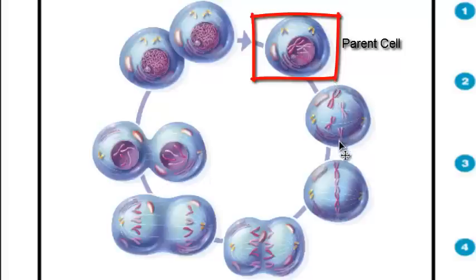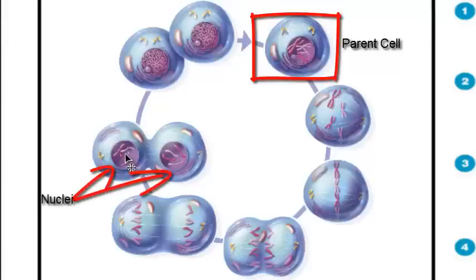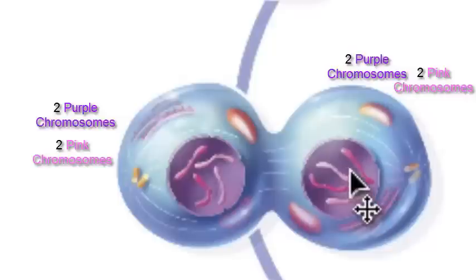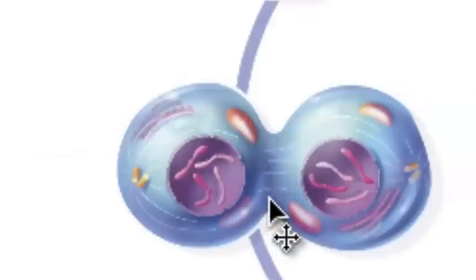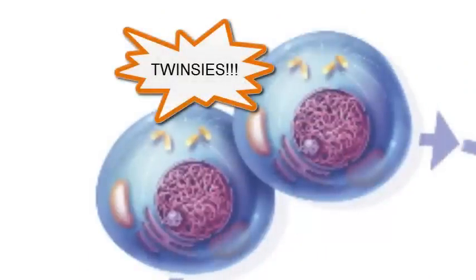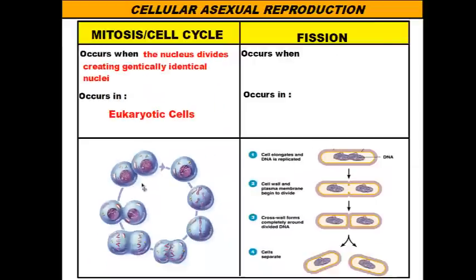Eventually, when the chromatid pairs line up, they get pulled apart and the DNA is placed into two separate nuclei during telophase. We end up with the same combination of genes in each nucleus — two genetically identical nuclei. Then as cytokinesis occurs and splits the cytoplasm, we end up with two genetically identical cells. So through the cell cycle, two cells are made, and because of mitosis, genetically identical nuclei are formed.